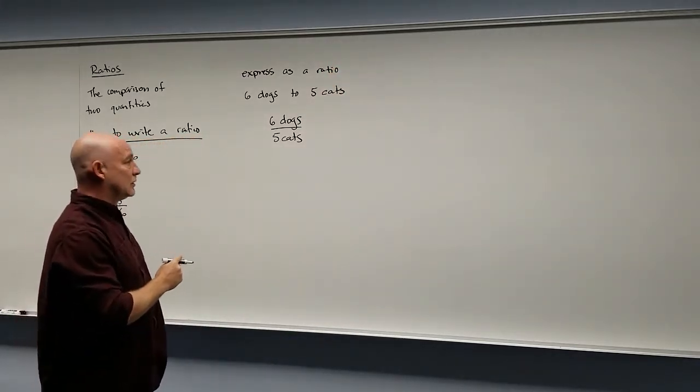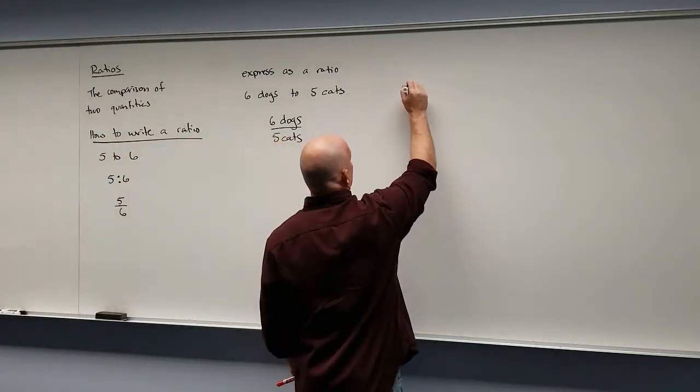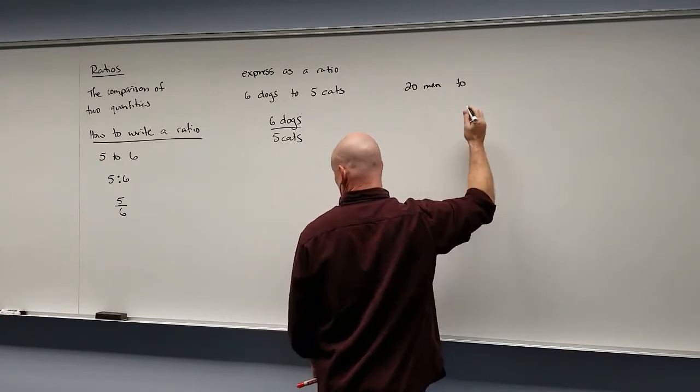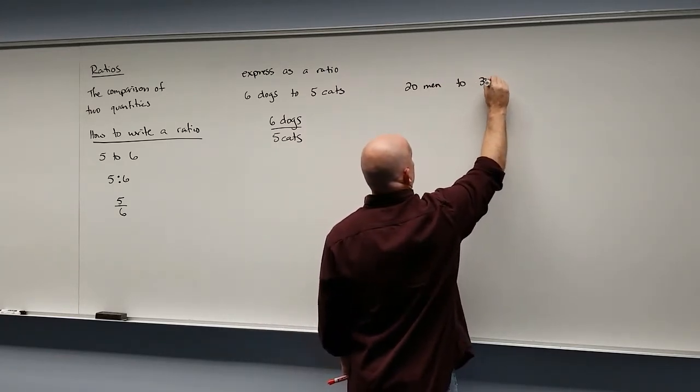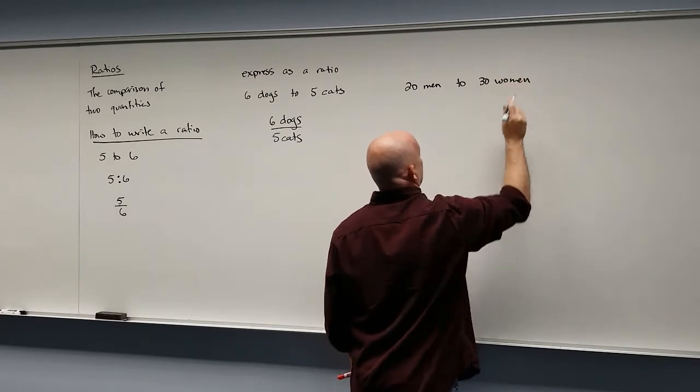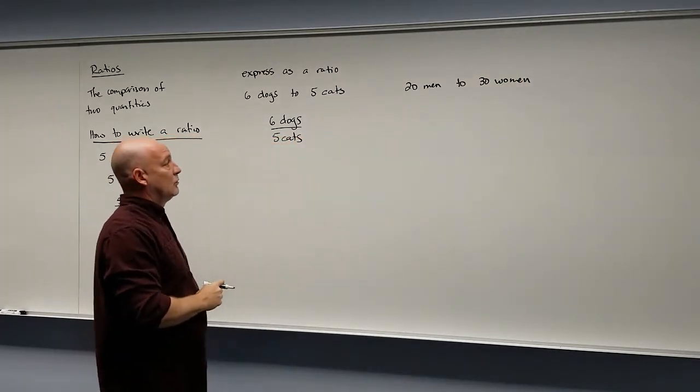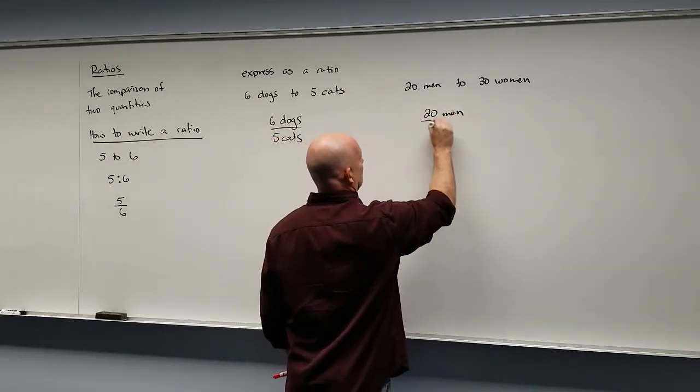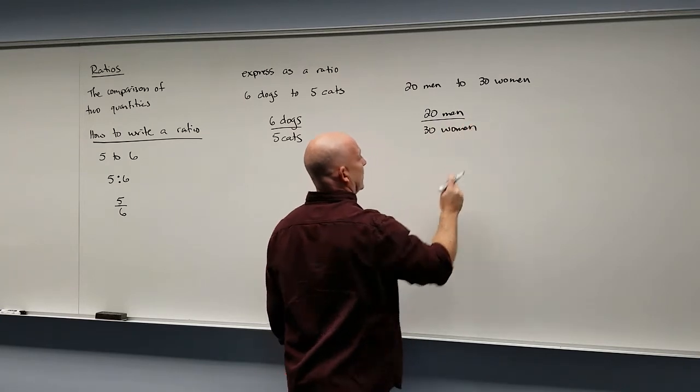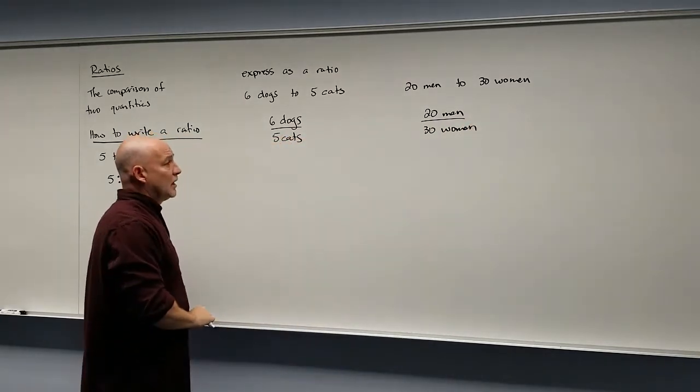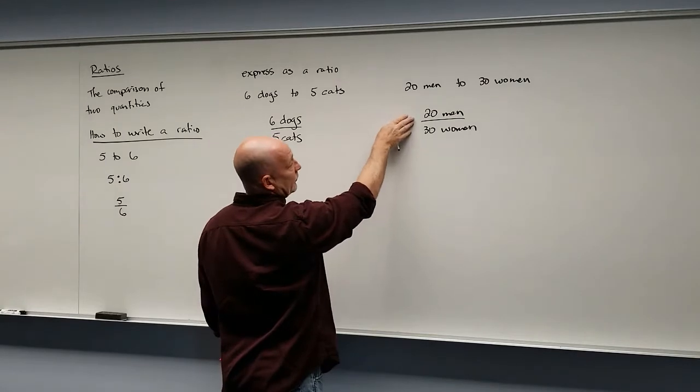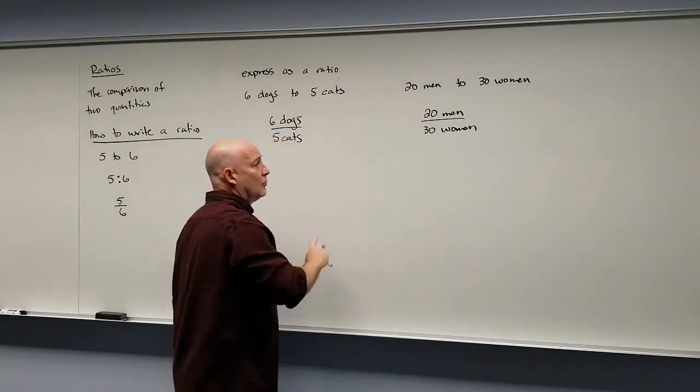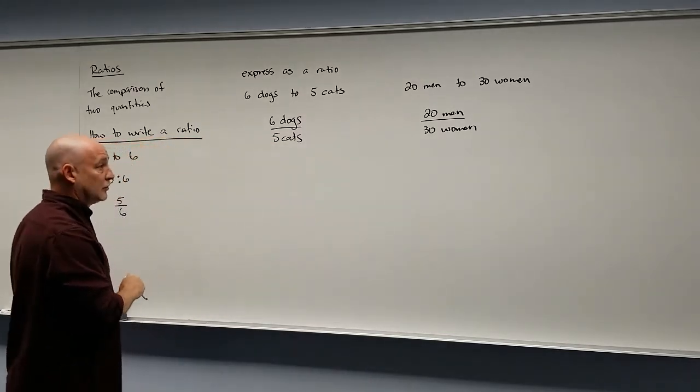So again, let's see if you're going to express 20 men to 30 women. So if we're going to write this ratio, again, whatever comes first goes on the top. So this would be 20 men to 30 women. Now most of the time with these fractions, if they just told you to express as a ratio, that's the ratio that they wanted. But they do generally want you to reduce those fractions when you get it into fractional form.